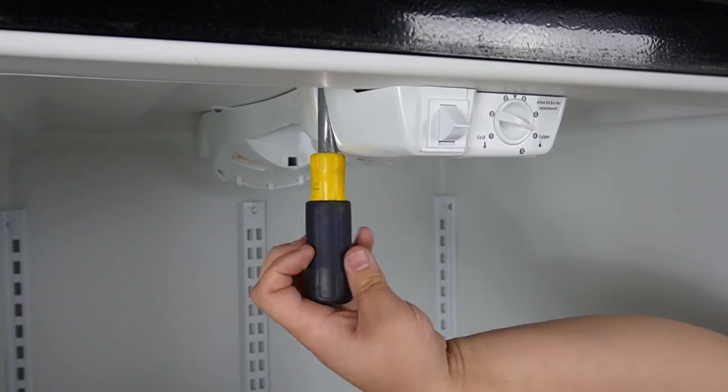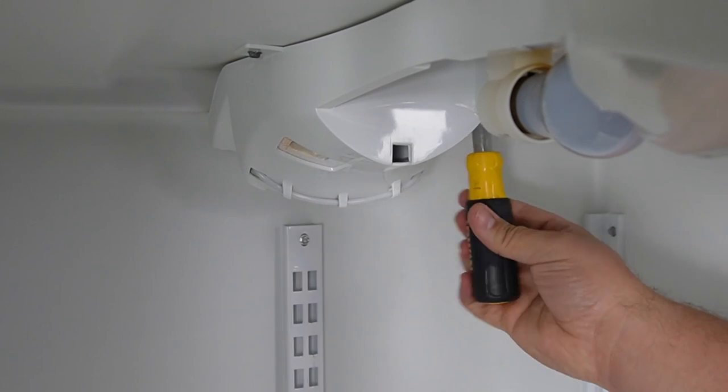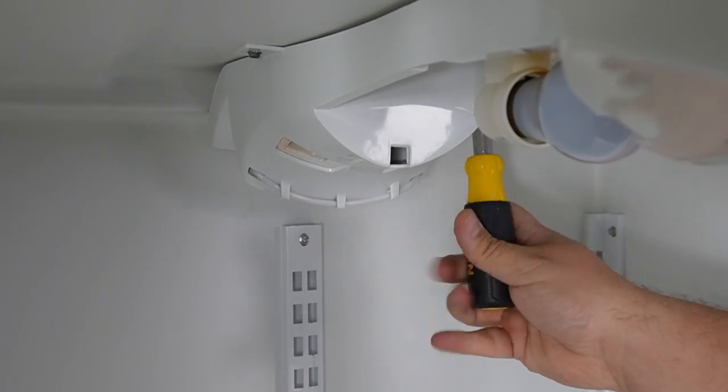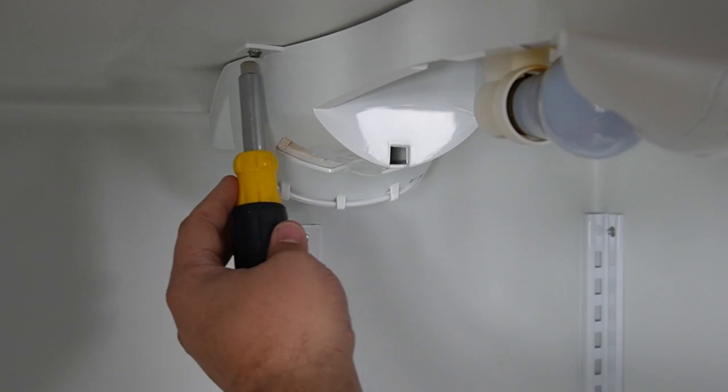When you begin to remove the two rear screws, you want to make sure to hold on with your other hand to the front of the control housing to prevent it from falling down when the screws get loose.